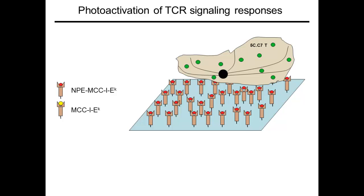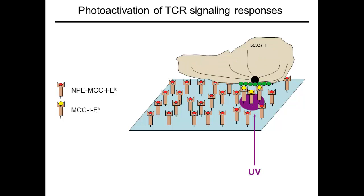During a video microscopy experiment, we use a source of focused UV light to irradiate a micron-sized region beneath an individual T-cell. This creates a region of cognate peptide MHC that the T-cell can recognize. In the ensuing minutes, we use either standard epifluorescence microscopy or total internal reflection fluorescence, or TIRF microscopy, to visualize the signals and polarized responses resulting from the stimulatory event.